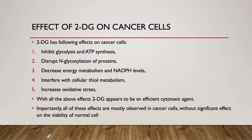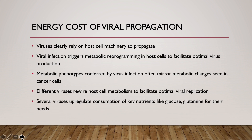In summary, the effects of 2-deoxy-glucose on cancer cells are: it inhibits glycolysis and ATP synthesis; it disrupts the N-glycosylation process; it decreases energy metabolism and NADPH levels; it interferes with cellular thiol metabolism; and it increases oxidative stress. With all these effects, 2-deoxy-glucose appears to be an efficient cytotoxic agent. Importantly, all of these effects are mostly observed in cancer cells without significant effect on the viability of normal cells.